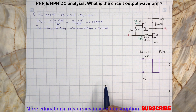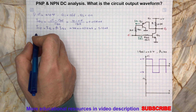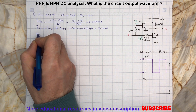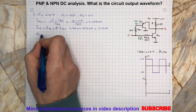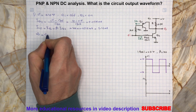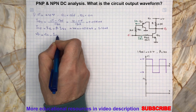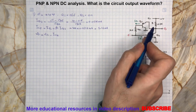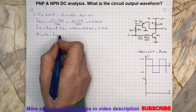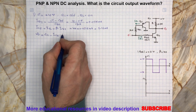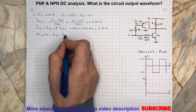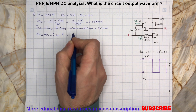Now, by a simple KVL, we can find the output voltage due to VI equal to positive 10V. So, VO equals VCC minus IC2 — also written as IR — multiplied by R, which equals...